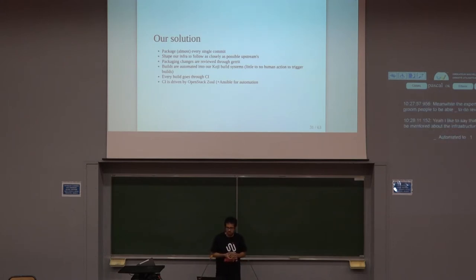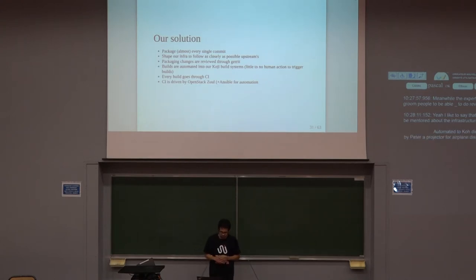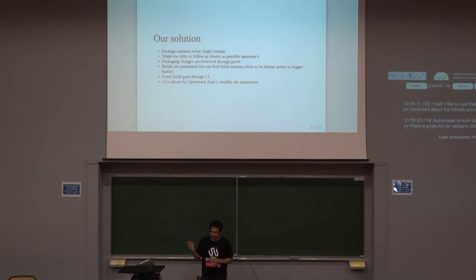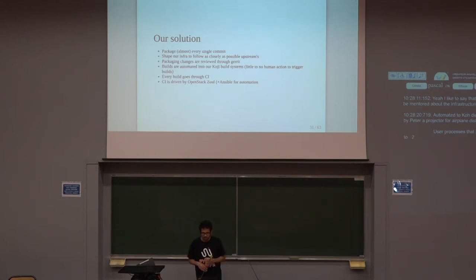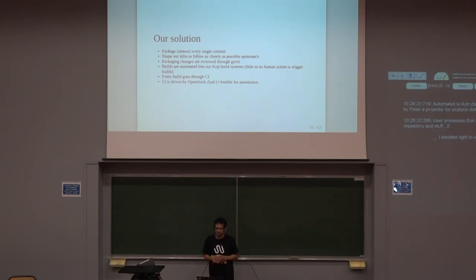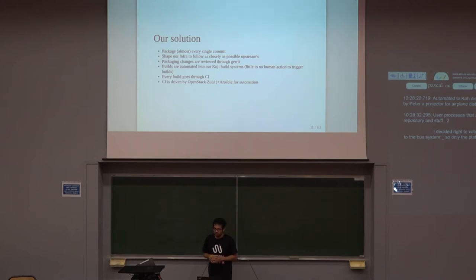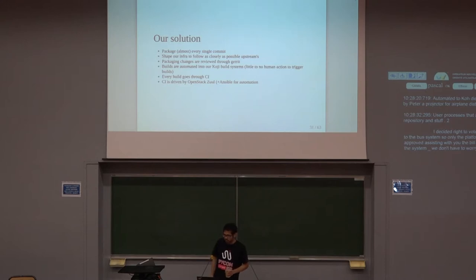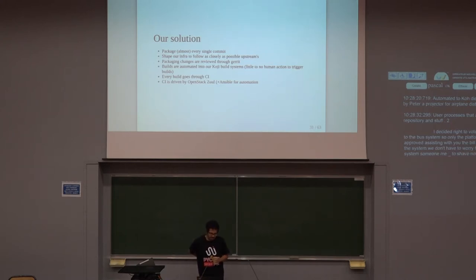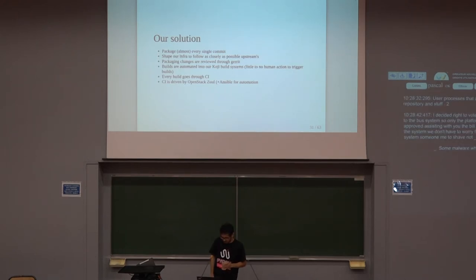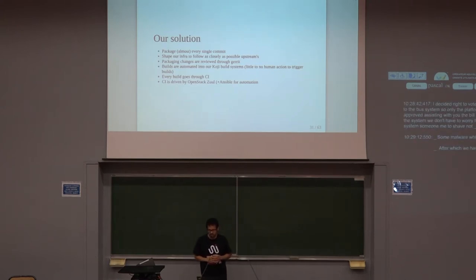Builds are automated through the Koji build system. Koji is a build system developed by the Fedora project for RPM distributions. The usual process has a human trigger a build, which is then pushed to a repository. Here, we decided that for security reasons we would not grant human access to the build system — only the platform can trigger builds. If your change is approved, the system triggers the build for you, so you don't need credentials to the build system. This avoids someone sneaking in malware by pushing builds not from the sources. After a build, it goes through the CI system, and if it fails, it doesn't get shipped to a repository.